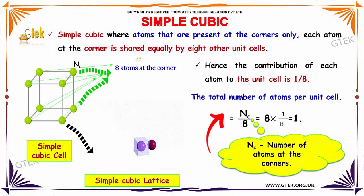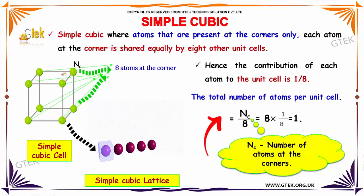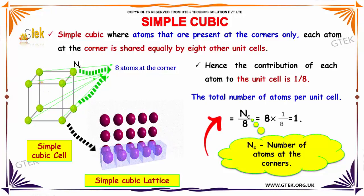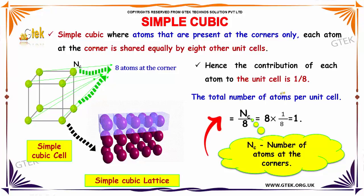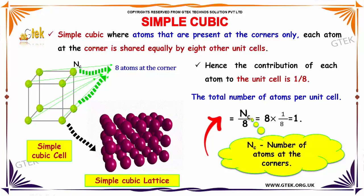In simple cubic, atoms are present at the corners only. Each corner atom is shared equally by the adjacent unit cells, so the contribution of each corner atom to the unit cell is 1/8. Therefore, the total number of atoms per unit cell is given by Nc divided by 8, which is 8 × (1/8) = 1.